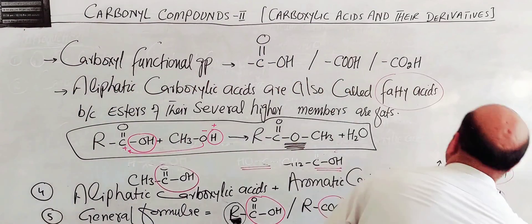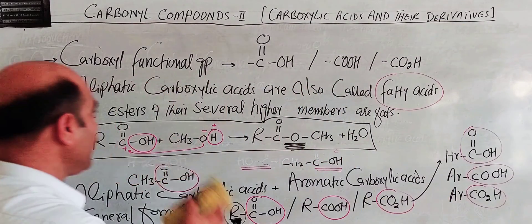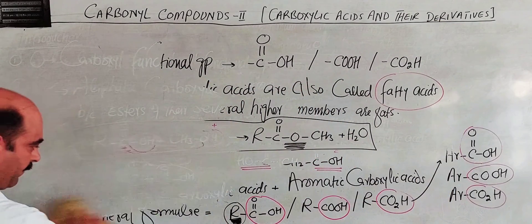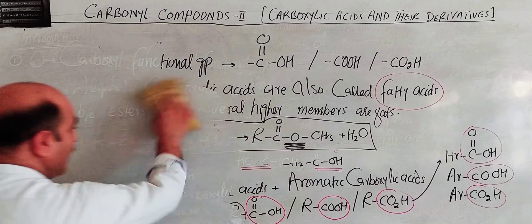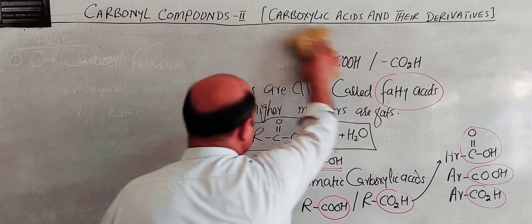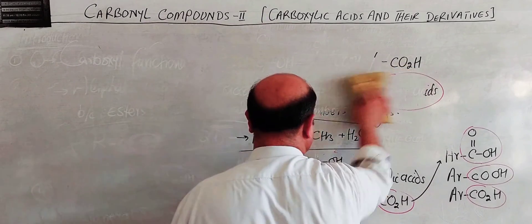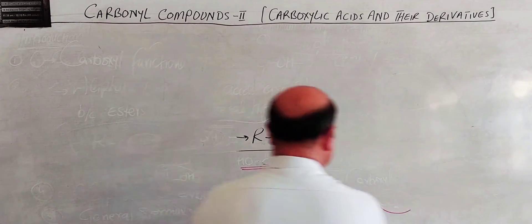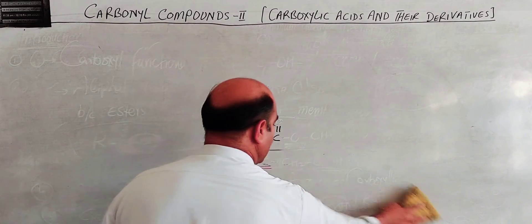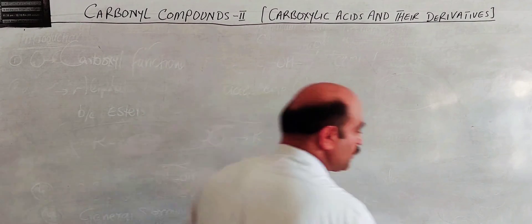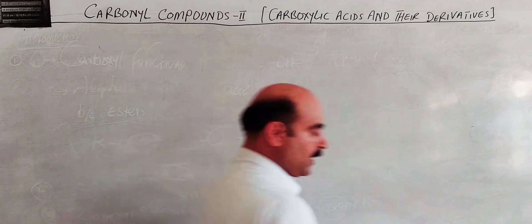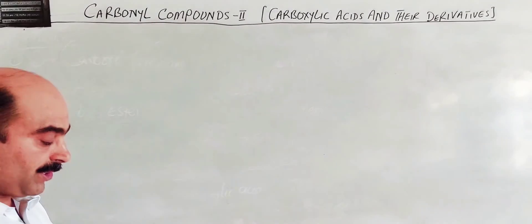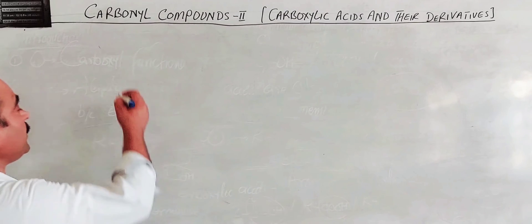The other important topic is derivatives of carboxylic acids. Derivatives are compounds derived from carboxylic acids. When the carboxylic acid is used as a starting material to produce other compounds, those compounds are called derivatives.